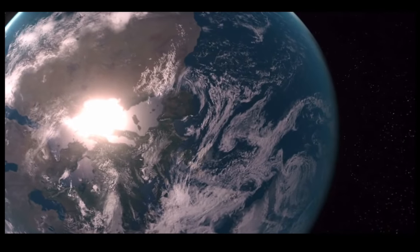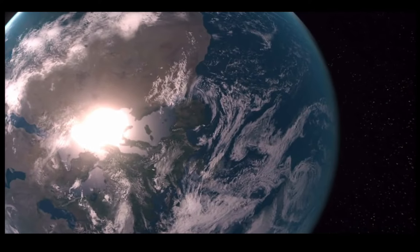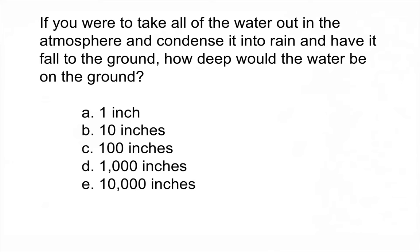Let's ask you this: If you were to take all the water out of the atmosphere and condense it into rain and have it fall to the ground, how deep would that water be? Remember, we're spreading this out over the whole Earth. Is it 1 inch deep, 10 inches deep, 100 inches, 1,000 inches, or 10,000? Think about your answer.